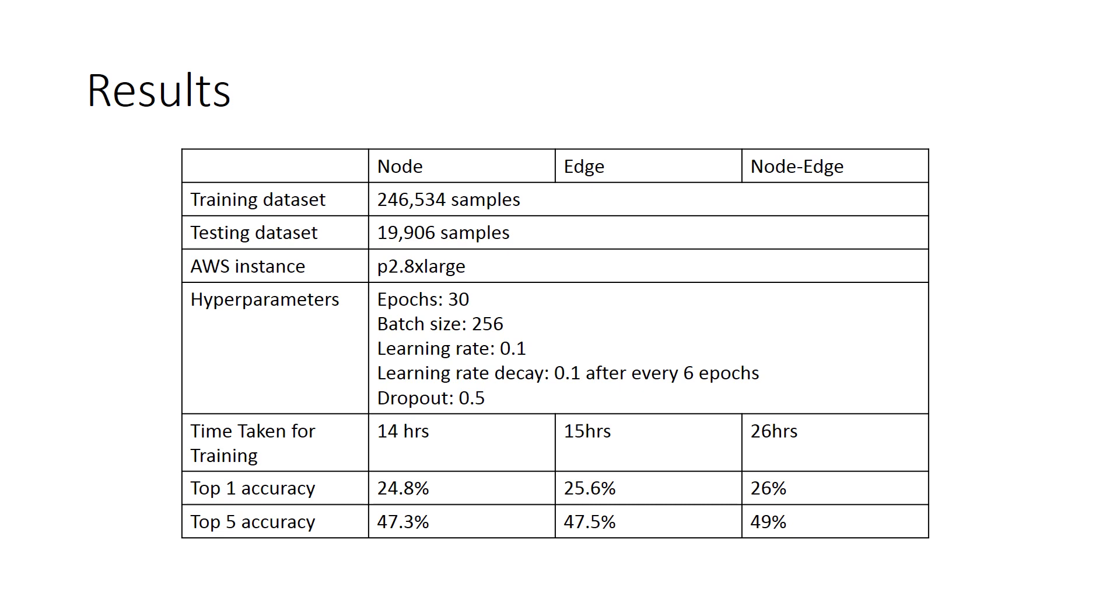The time taken for training for node is 14 hours, for edge is 15 hours and the combination will take a longer time of 28 hours. As we can see, the top-1 accuracy for the hybrid model is more than the node and edge. It can be seen similar for the top-5 accuracy.